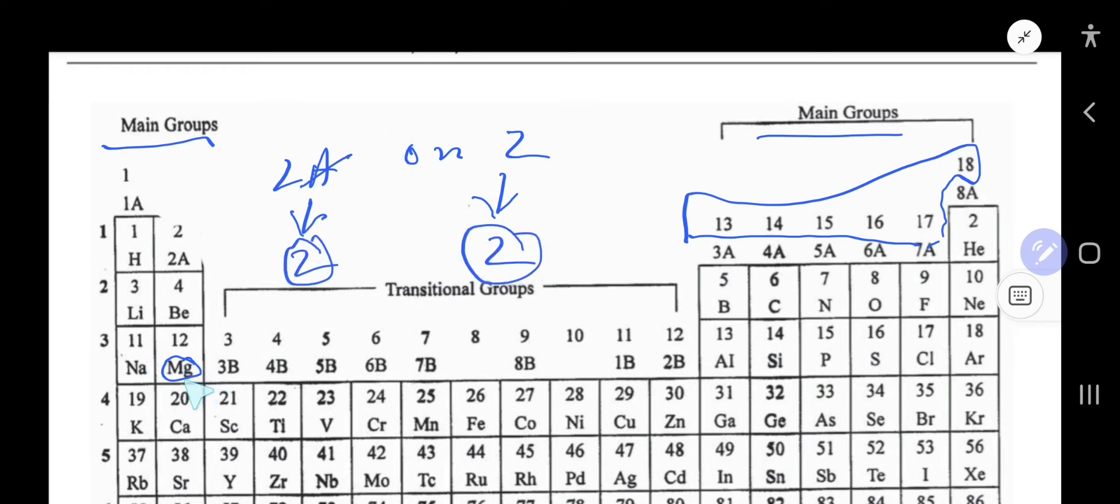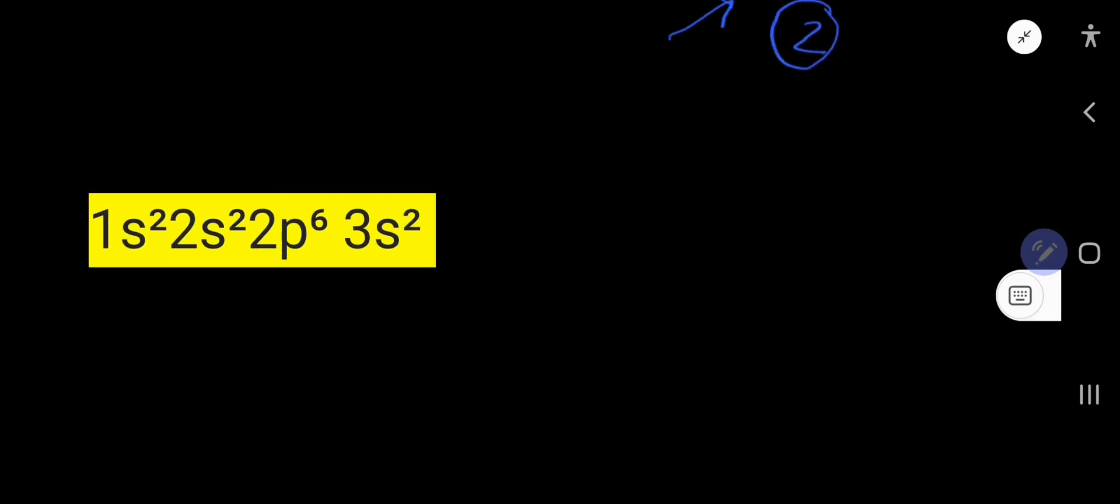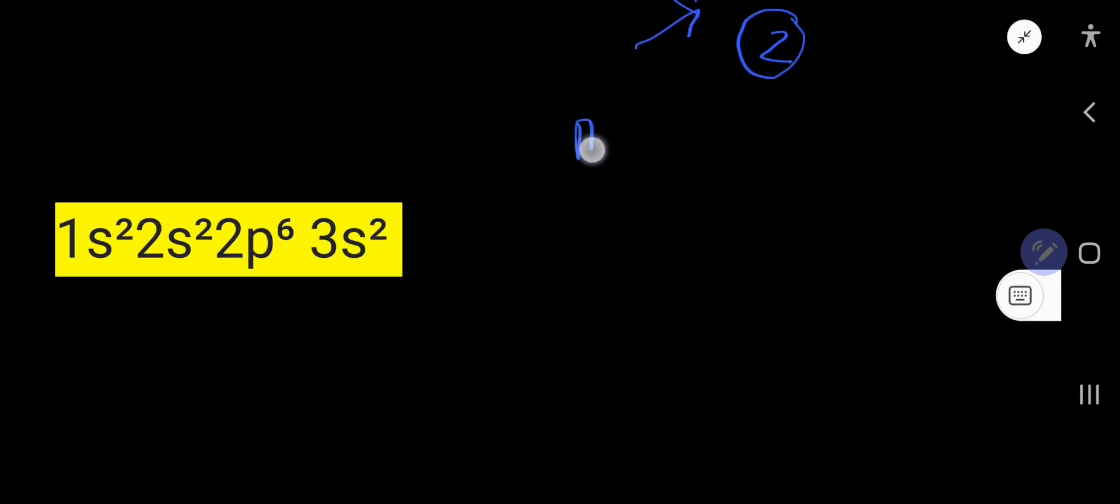The second way is to find the valence electrons for magnesium from its electron configuration. The atomic number of magnesium is 12, which means it has 12 protons and 12 electrons.